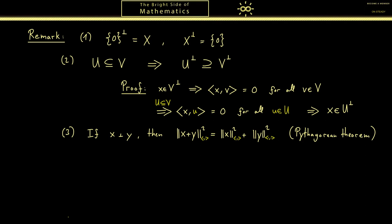For the end of the video I want to give you a visualization. If this is a two dimensional plane in a three dimensional space, then U perp is a one dimensional line. This is how you should imagine the relation between U and U perp. The only intersection they have is the zero vector.